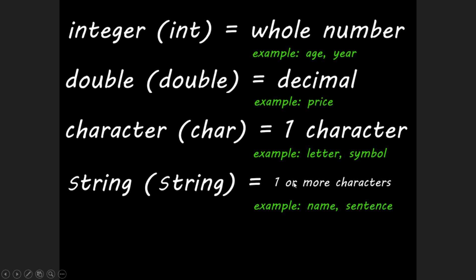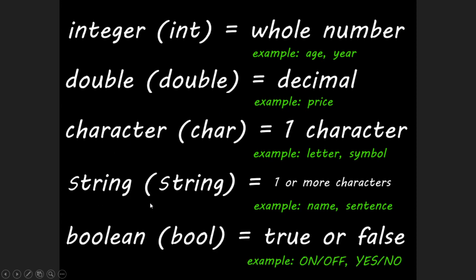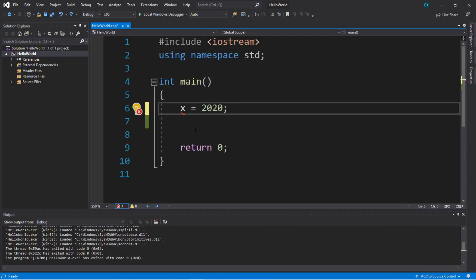A string can hold one or more characters — an example would be somebody's name or even an entire sentence. It also has the capability of holding a single character, but we treat strings and characters differently. We also have boolean, which can hold either true or false. This is useful if you need to verify if something is correct or on or off. To declare a boolean, you write bool before the variable name.